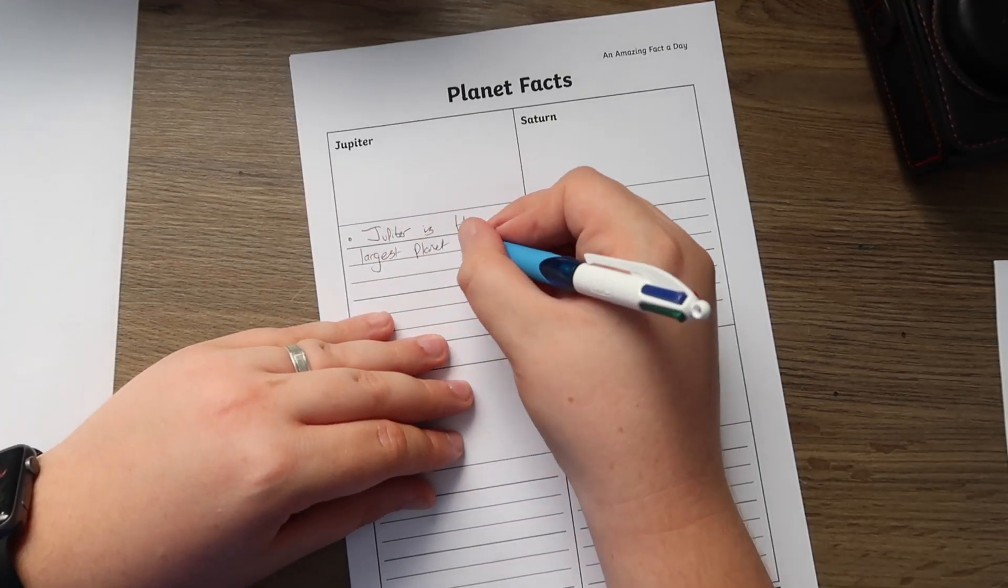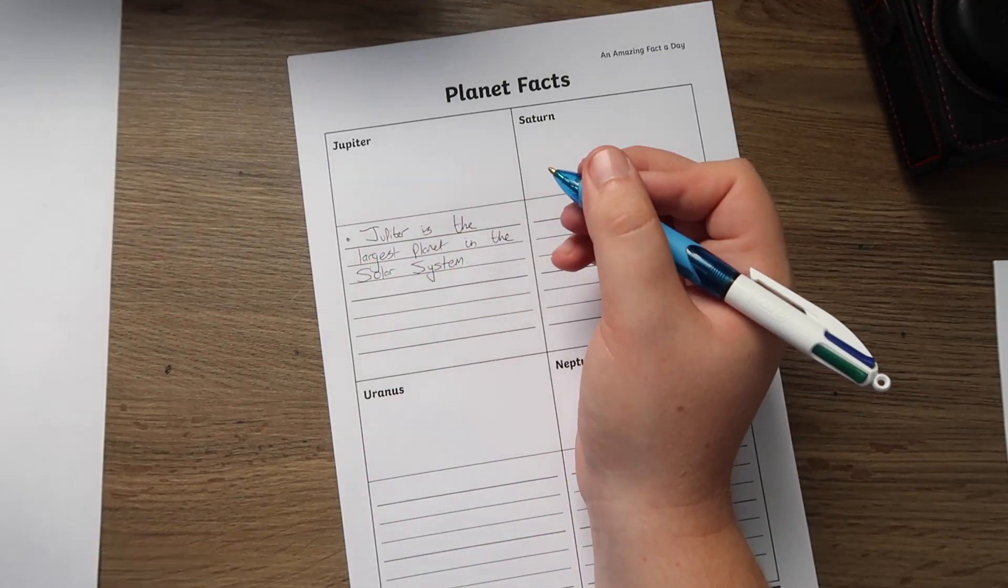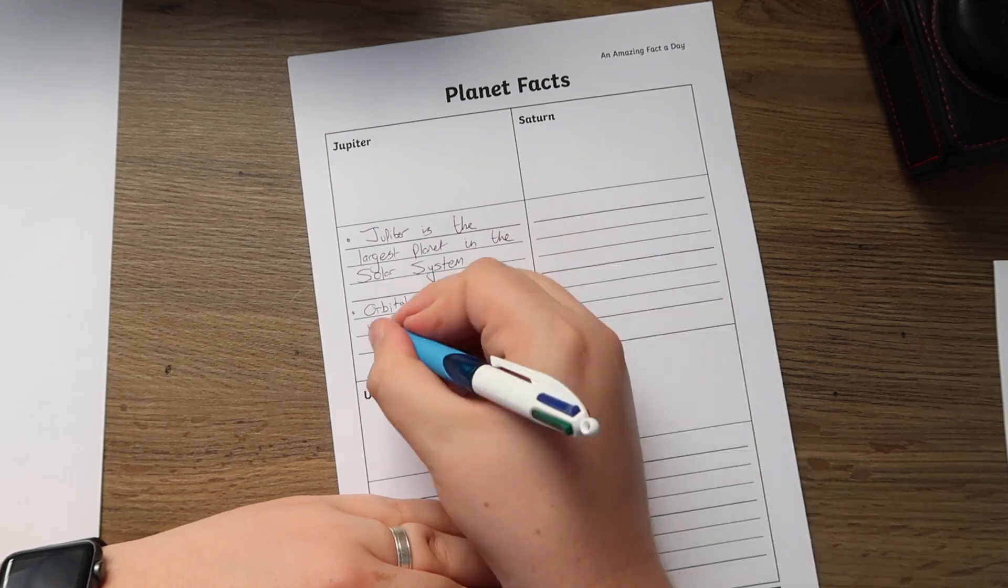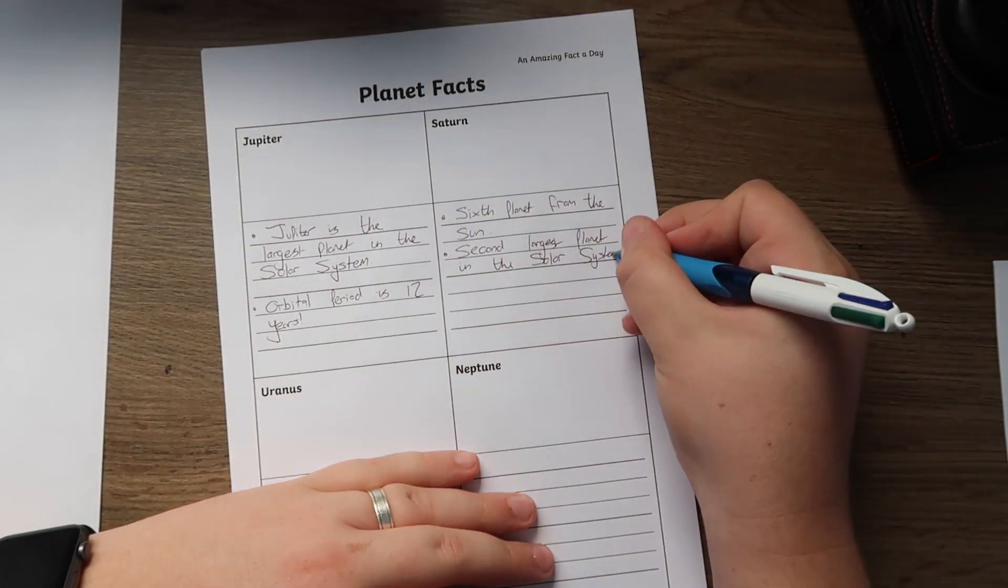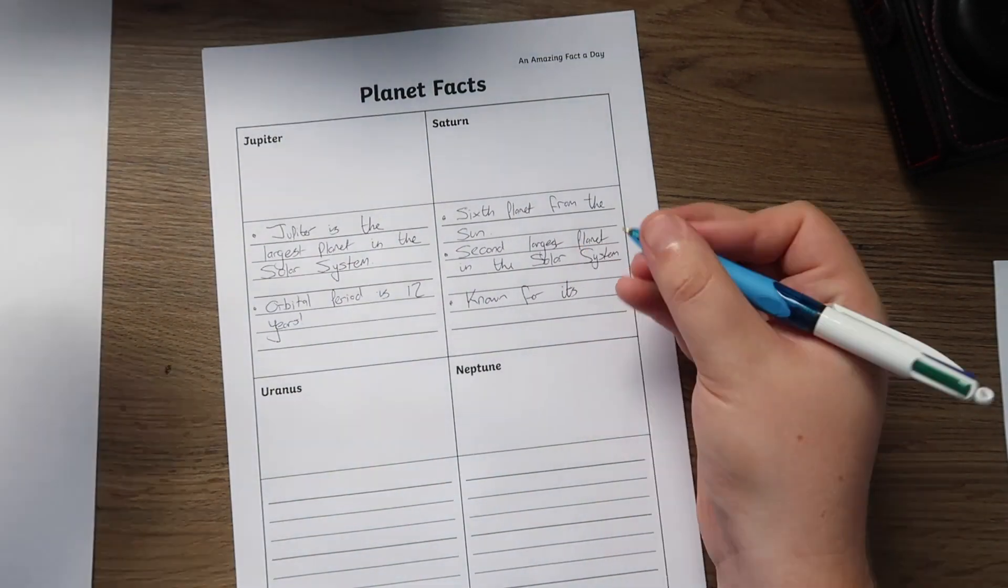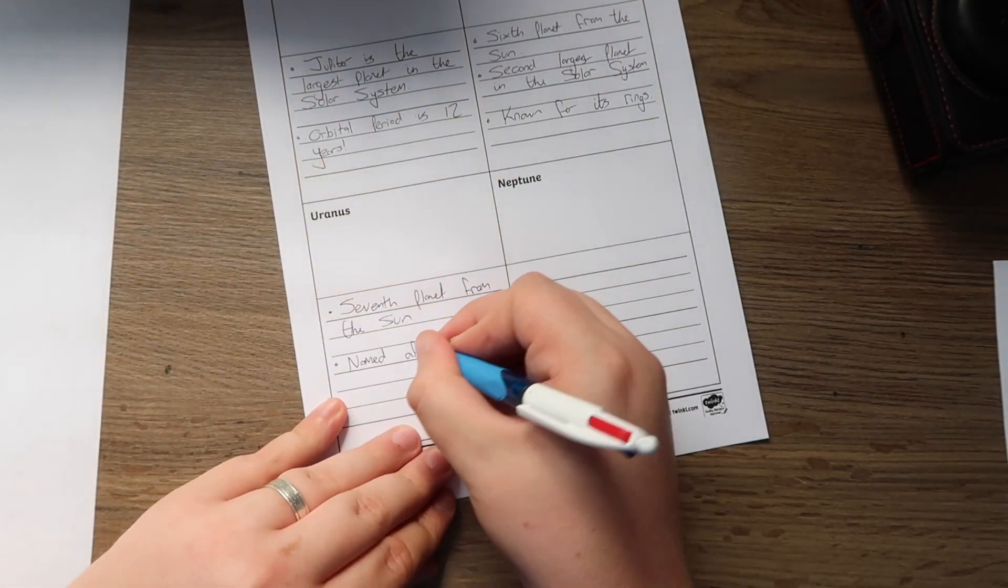The fact file section can be used in several different ways depending on the style of lesson being taught. You may want to use this resource at the end of your topic on space. This could be your child's chance to show off how much they have learned throughout the topic.